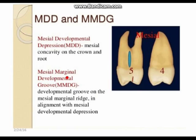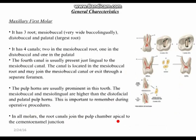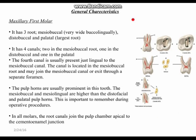Just remember: the mesial developmental depression is the mesial concavity on the crown and root, and the mesial marginal developmental groove is on the marginal ridge, aligned with the mesial developmental depression. I had previously labeled it as 'mesial lingual developmental depression,' so I've removed that to make sure you don't get confused.